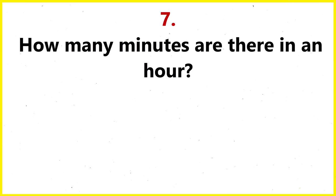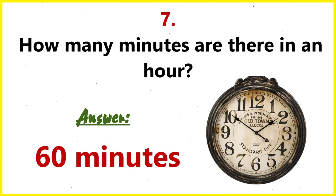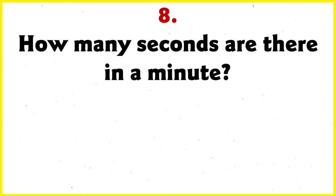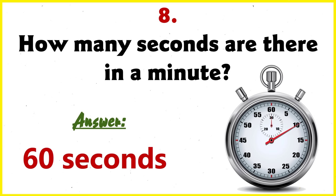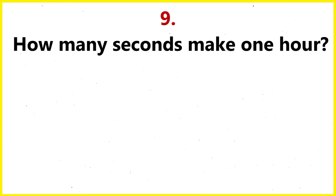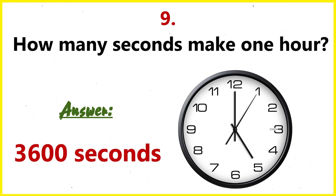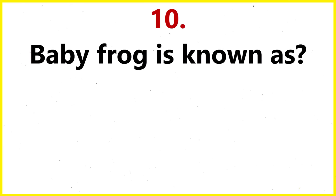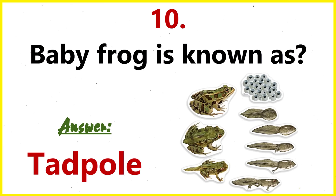How many minutes are there in an hour? 60 minutes. How many seconds are there in a minute? 60 seconds. How many seconds make one hour? 3600 seconds. Baby frog is known as? Tadpole.